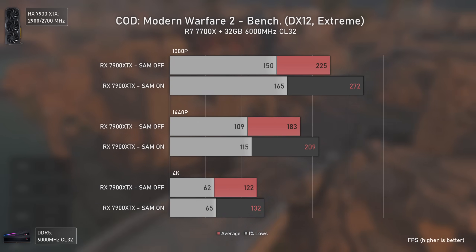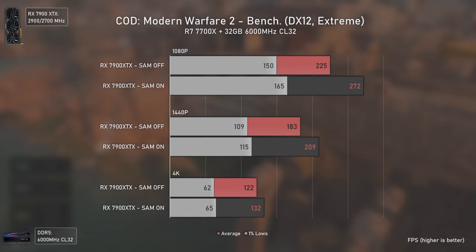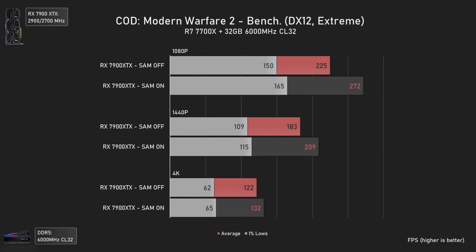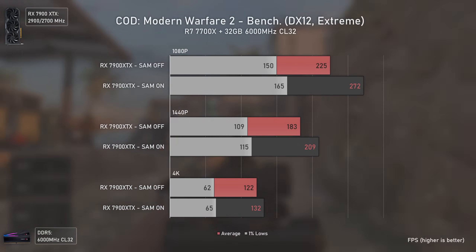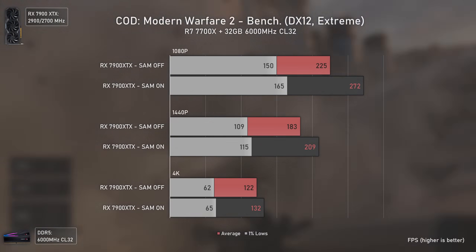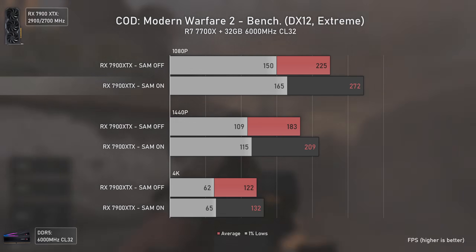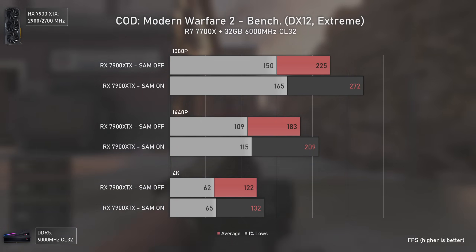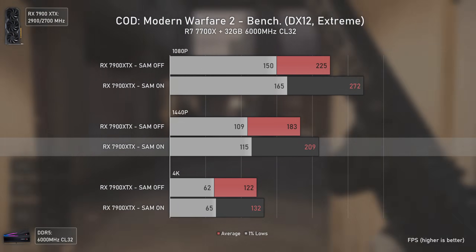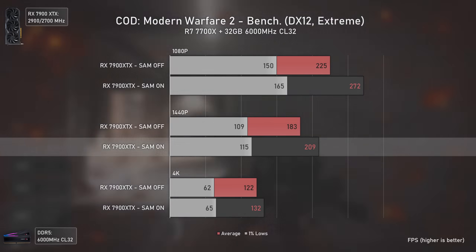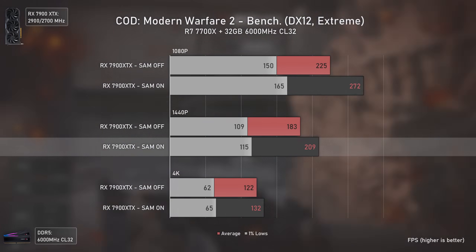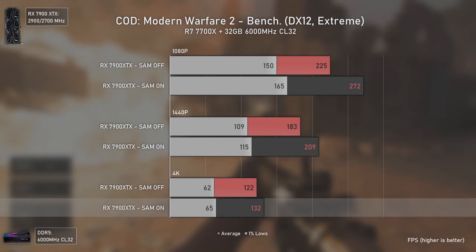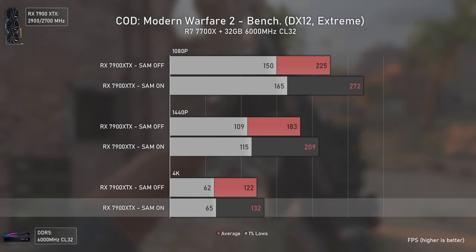Moving to Call of Duty Modern Warfare 2, we also have a big performance difference. Smart Access Memory is actually more important in high-FPS-driven scenarios, as the difference gets smaller as FPS numbers do. At 1080p we get a massive boost of almost 50 average FPS, which is around 21%. At 1440p the difference is smaller — 26 average FPS, representing a 14% increase. And at 4K it's only about 10 average FPS, which is an 8% performance uplift.